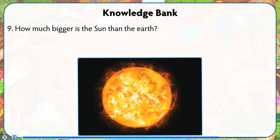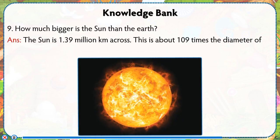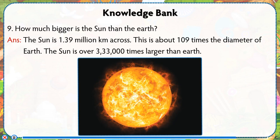How much bigger is the sun than the earth? The sun is 1.39 million kilometers across, which is about 109 times the diameter of earth. The sun is over 333,000 times larger than earth.